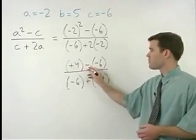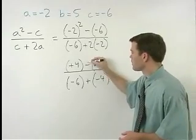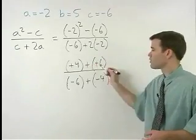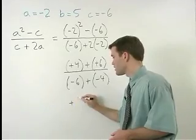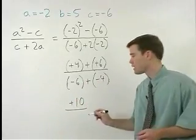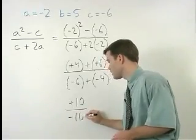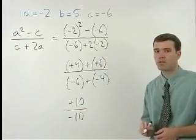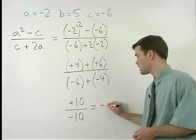Up top, minus a negative can be thought of as plus a positive. 4 plus 6 is positive 10. Negative 6 plus negative 4 is negative 10. And positive 10 over negative 10 is negative 1.